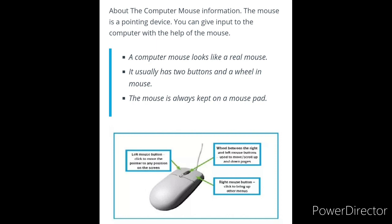The mouse has a left mouse button and a right mouse button. The mouse is always kept on a mouse pad. The left mouse button is responsible for clicking and moving the pointer to any position on the screen. The scroll wheel is used for moving the page up and down.